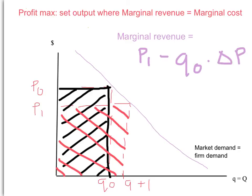Notice immediately that this means the marginal revenue when you sell another unit as a monopoly — when you face a downward sloping demand curve — is less than the price, because it's the price take away the reduction on inframarginal revenue. We call this inframarginal revenue because it's the revenue from units previously sold — the units that are now inframarginal as opposed to the marginal unit. It's the inframarginal quantity times the change in price when we drop the price on all units to sell another unit.